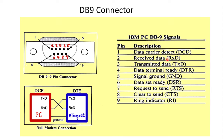The remaining pins of the DB9 connector are called handshaking signals. They are useful in serial communication — before data transmission, the transmitter and receiver exchange information over these handshaking lines, and once handshaking is complete, the actual data transmission takes place.